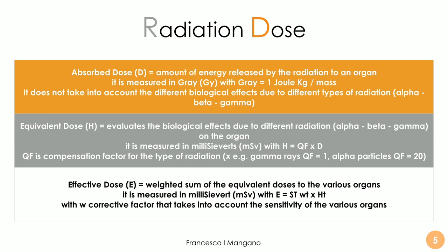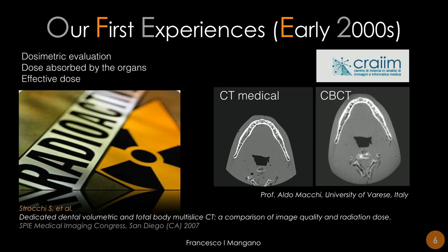In the early 2000s, when I was at the University of Varese with Professor Aldo Macchi, we started to consider these concepts. When we talk about radiation dose, we need to consider three different things: the absorbed dose, the equivalent dose, and most of all the effective dose. The effective dose, measured in milli or micro sievert, is the weighted sum of the equivalent doses to the various organs, with a corrective factor that takes into account the sensitivity of the various organs. We generally use this parameter to understand the radiation dose coming from a CBCT scan.